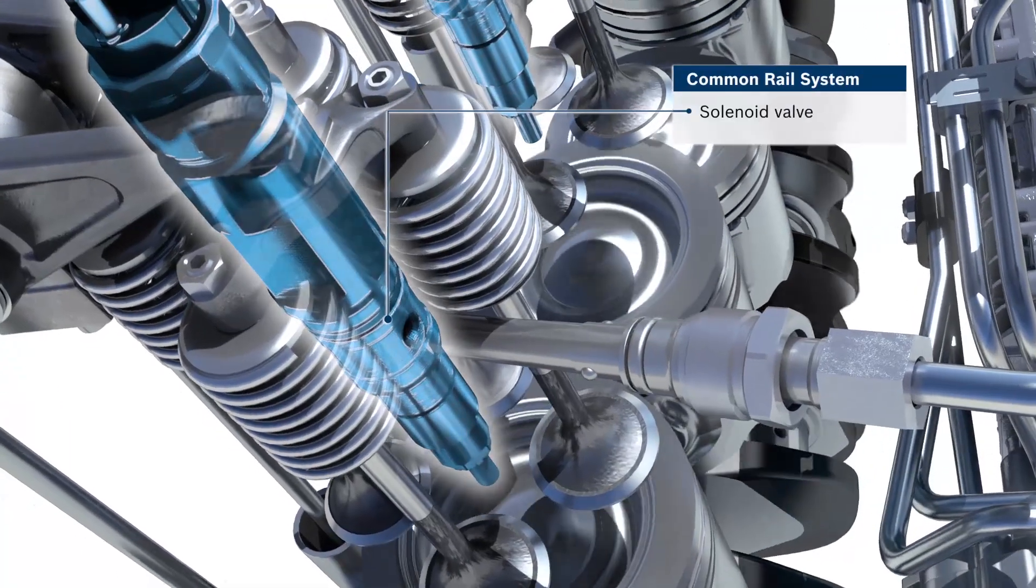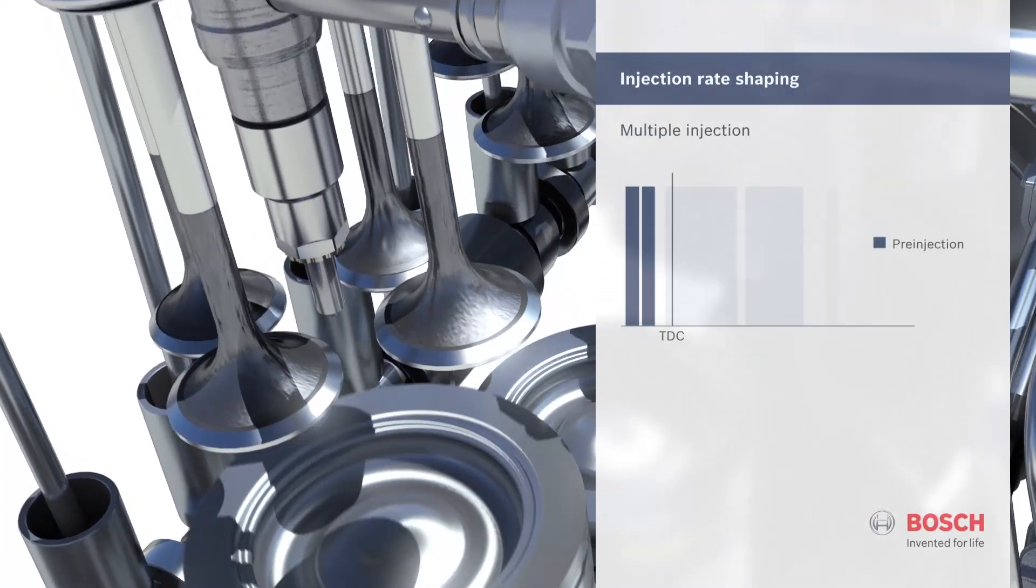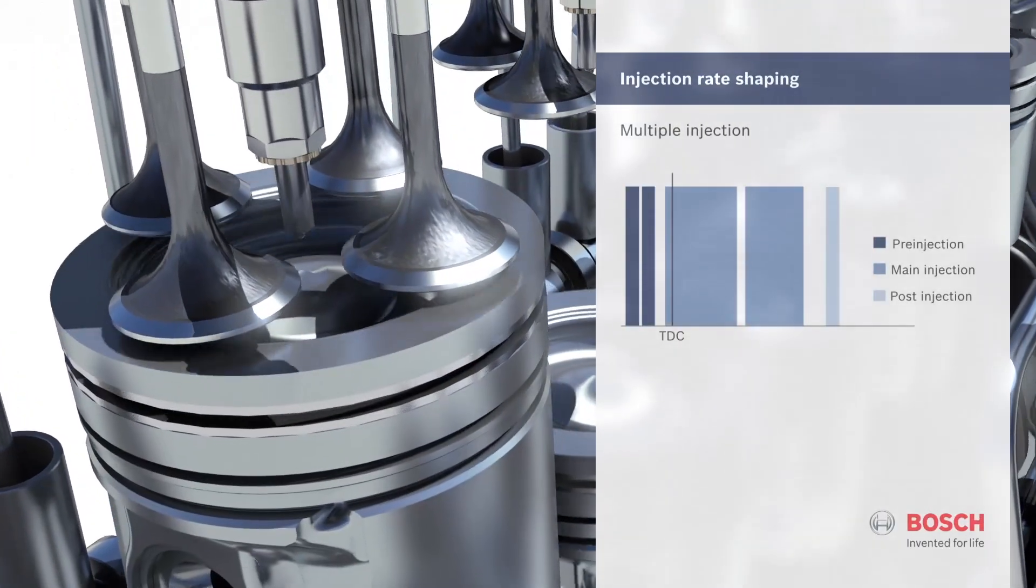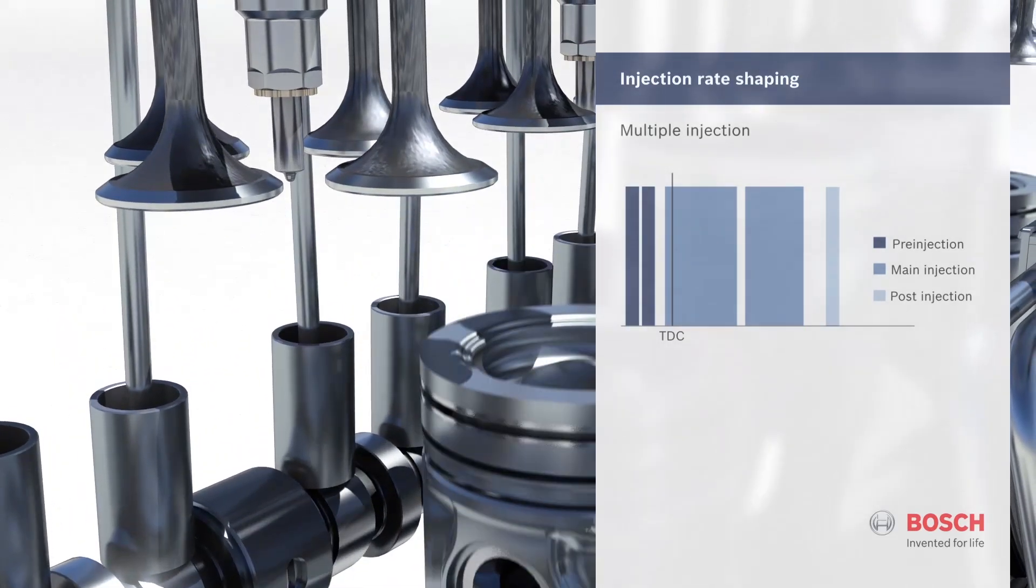Bosch solenoid valve injectors control the nozzle needle so quickly that the injection process can be divided into pre-, main, and post-injections, up to eight separate partial injections per power stroke.